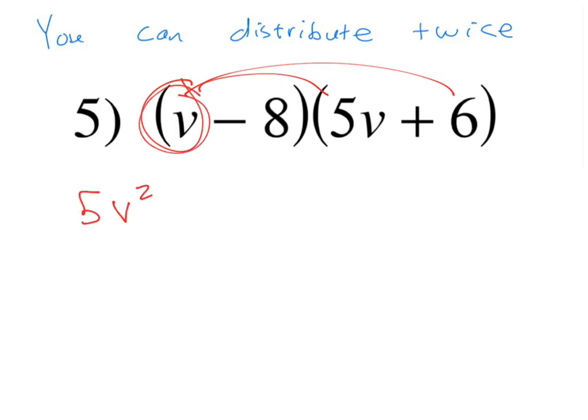And now I'm going to have to do v times 6 there. v times 6 is 6v. And we're going to put the addition there, plus 6v.